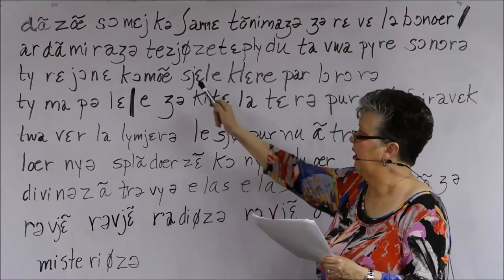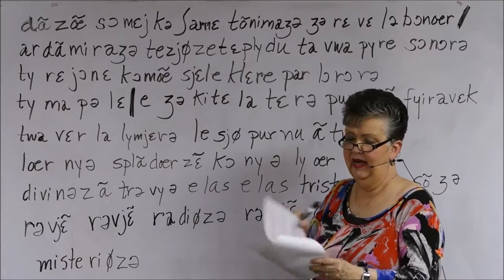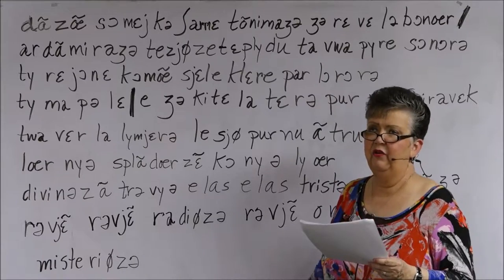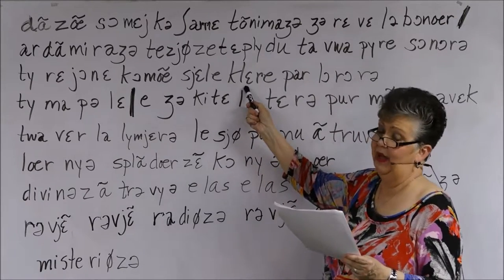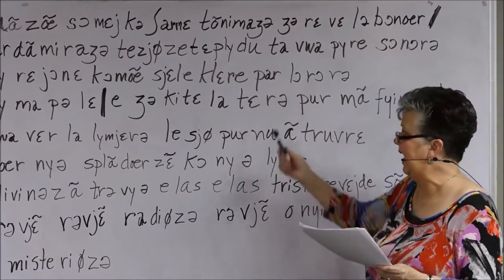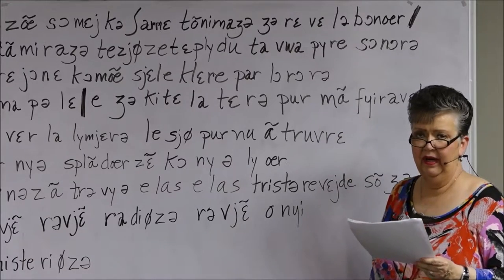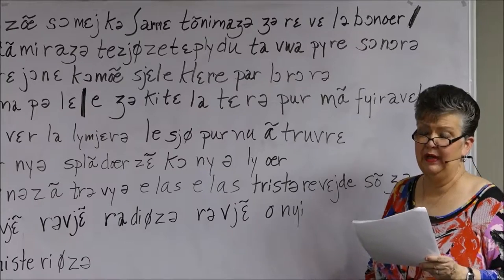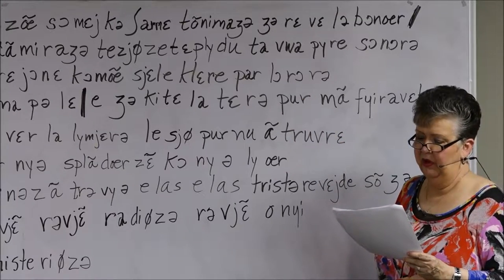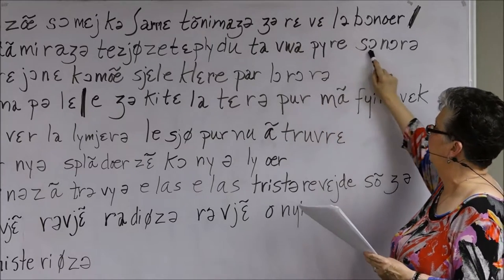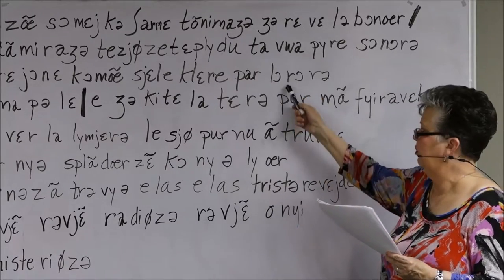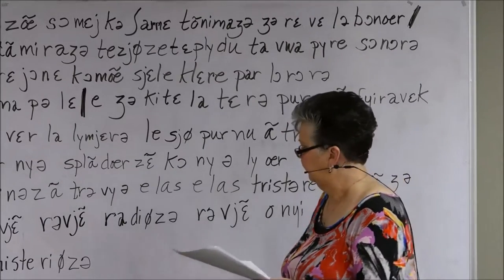For 'comme un ciel éclairé par l'aurore': C becomes [k], double M but no nasal vowel. The E drops out in elision — no note for the schwa — so the M connects over to the nasal vowel: 'comm-un.' Then 'ciel': C-I becomes [s], E is open, L connects over to the acute-accented E: 'ciel éclairé.' Open A-I spelling for 'éclairé,' then 'par' with bright [a]. L-apostrophe: the E is contracted out, giving 'l'aurore' with the open [ɔ] before R followed by a vowel.